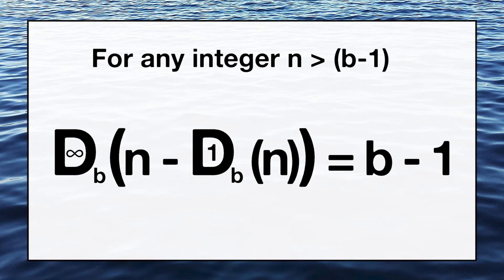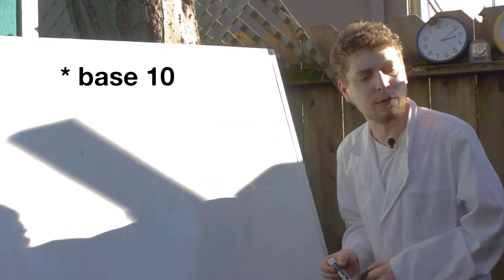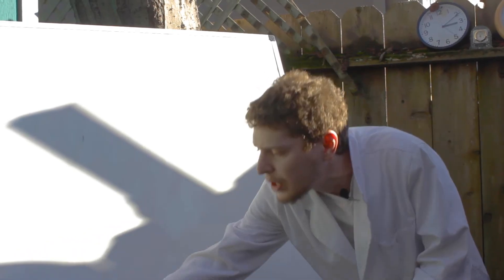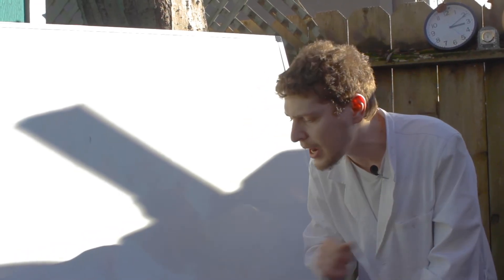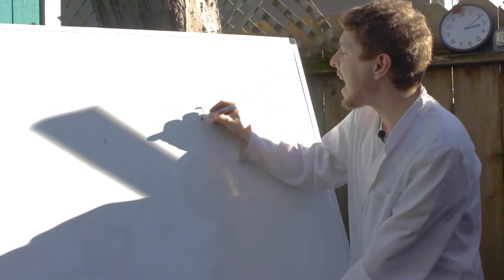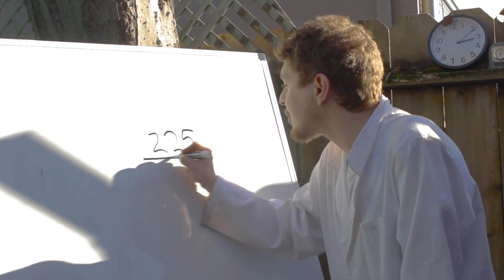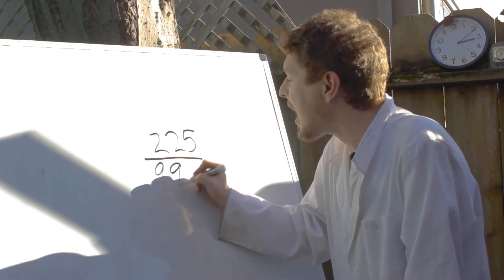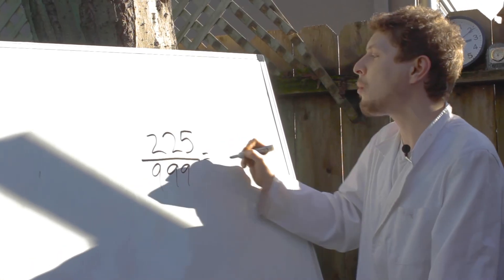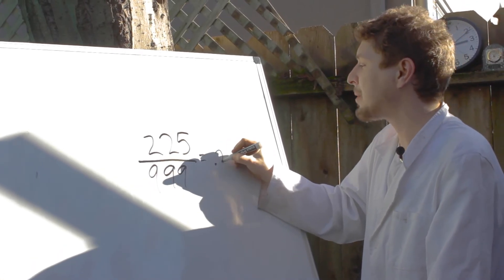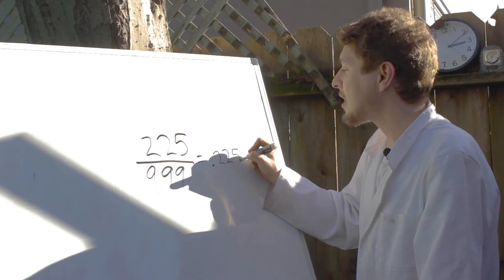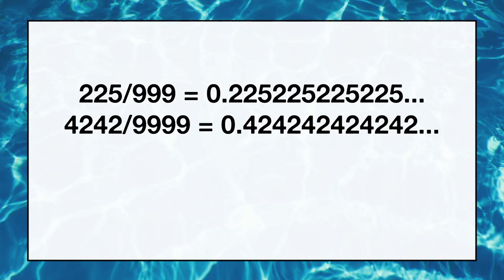So have fun reading your friends' minds, and before we leave, let me show you one last fun fact about what this 9ness can do back in our base 10 world. Why don't we pick a random number once again? I like my dice, 225. And if you take any random number and divide it by the same amount of nines...